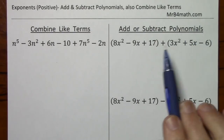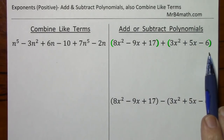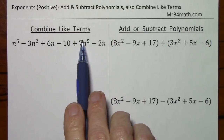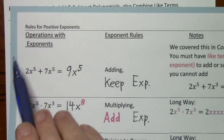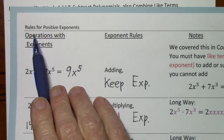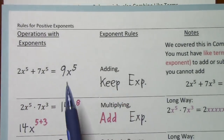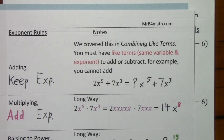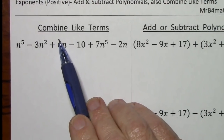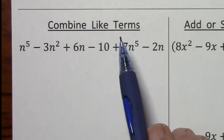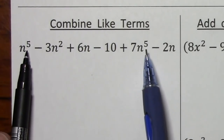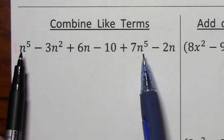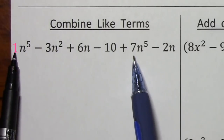To add or subtract polynomials, you need to get rid of parentheses and then combine like terms. As I mentioned in the video Rules for Positive Exponents, I have a video to explain combining like terms — it's the first one on the algebra page of mrb4math.com. In order to combine like terms, you need the same variable and exponent, and then you simply add or subtract the coefficients.